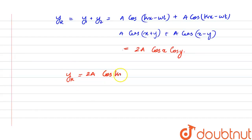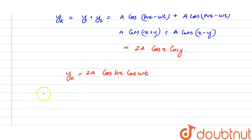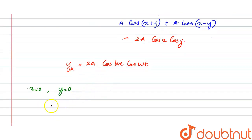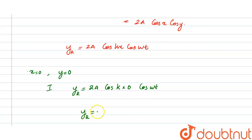We have said that a node is a place where the amplitude is zero, and the given node is at x equals 0. Substituting x equals 0 into y_r equals 2a cos(kx) cos(omega t) gives 2a cos(0) cos(omega t), which equals 2a cos(omega t), which is not zero. So Case 1 does not satisfy the node condition, and we move on to the next case.